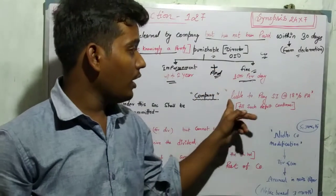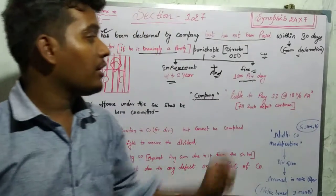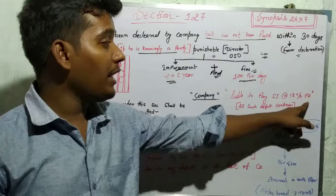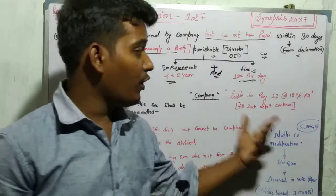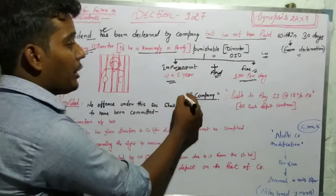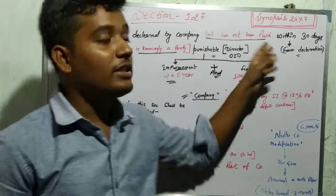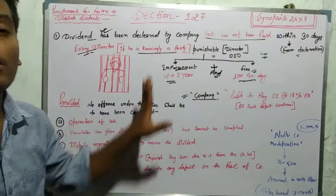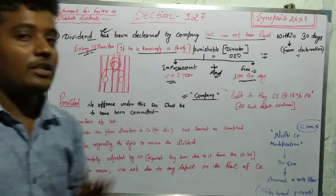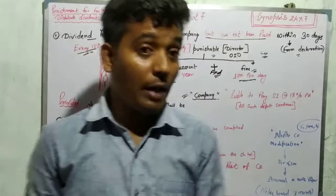The company is liable to pay simple interest at the rate of 18% from the date of default. If you distribute dividend, you must pay within 30 days. If you don't pay, you will be in default. There are also exceptions.